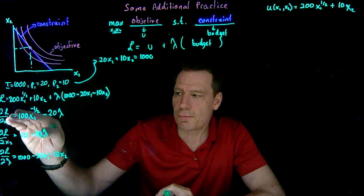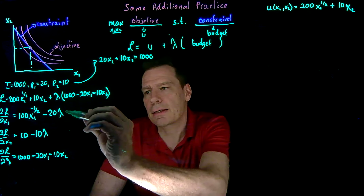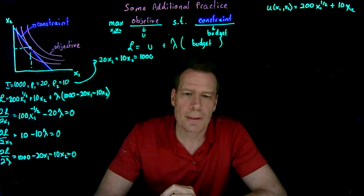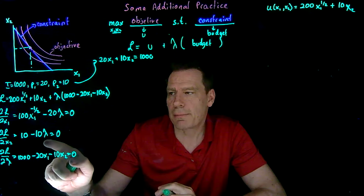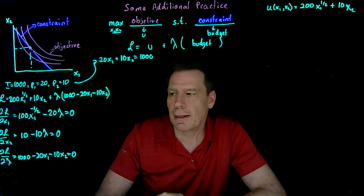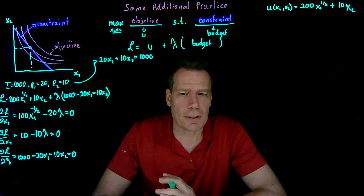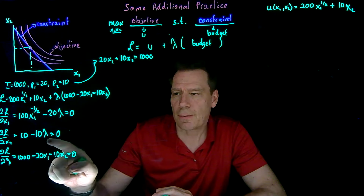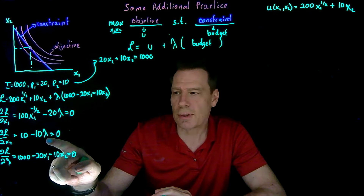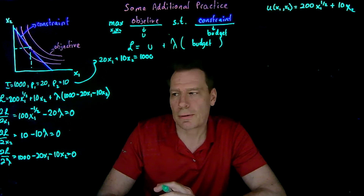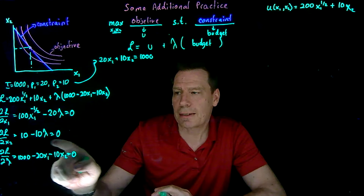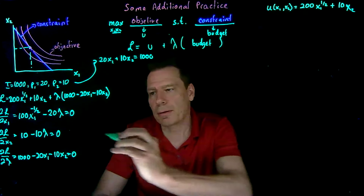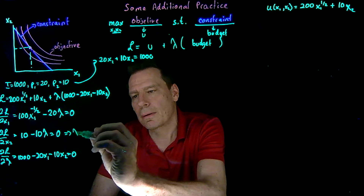First step: solve for these partial derivatives, then set the equations to zero. These are called our first order conditions of the maximization problem. Now we have three equations and three unknowns: lambda, x1, and x2. We try to find the easiest way to solve that system. Here, the second equation is just in terms of lambda, so we can immediately solve for lambda: 10 equals 10 lambda, divide by 10, so lambda equals 1.